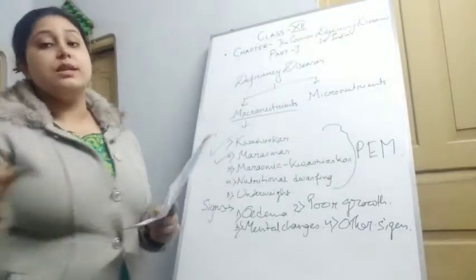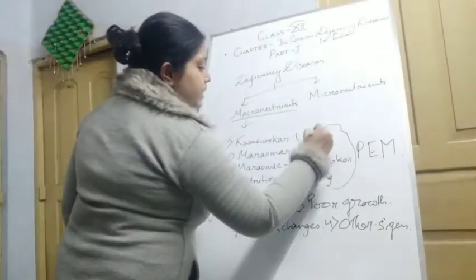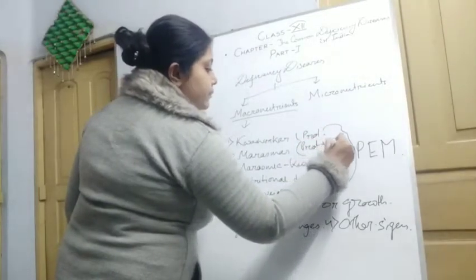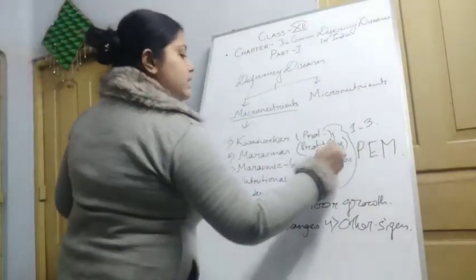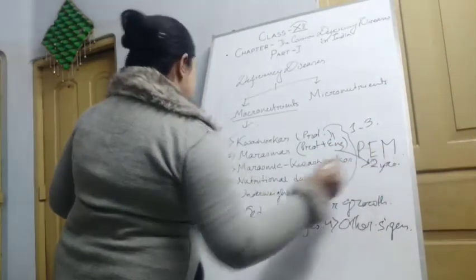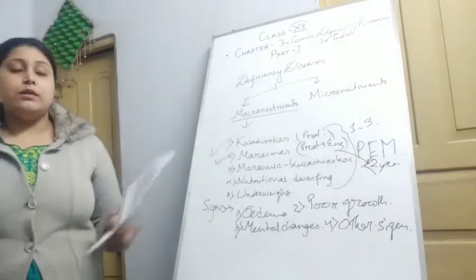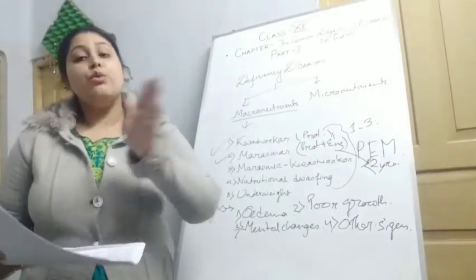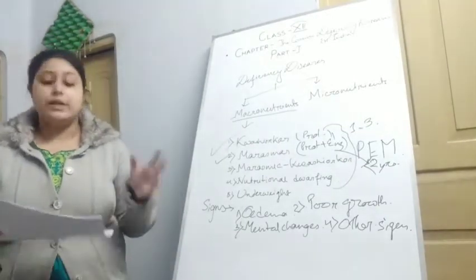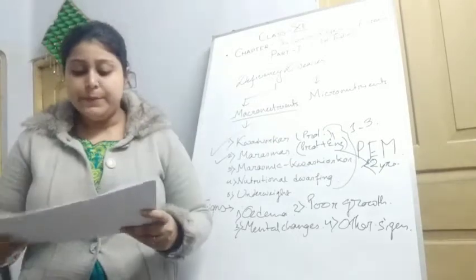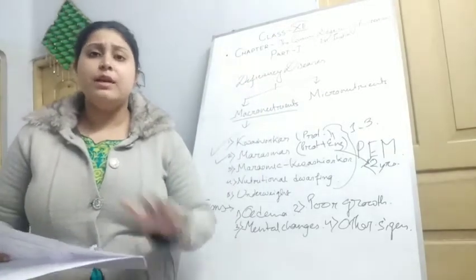Now coming to Marasmus. Marasmus is mainly due to both energy and protein deficiency. It is mainly seen in children below the age of 2 years. The main difference from Kwashiorkor is that there is no water retention in Marasmus, whereas water retention is seen in Kwashiorkor. They also have retarded growth, a monkey-face appearance, loose motion problems, and many skin-related problems.